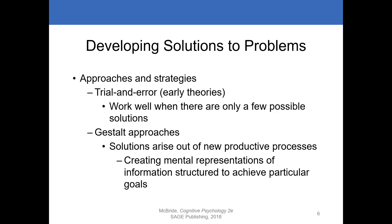Gestalt psychologists argued that we don't use a trial-and-error process. The Gestalt approach goes beyond past associations, and solutions arise out of new productive processes. These include creating mental representations of information structured to achieve a particular goal. Often solutions result from a sudden breaking away from past associations and reorganizing the mental representation of the problem. Other times, problems are solved by recognizing that past problems — even ones that differ on surface features — share an underlying structure with the current problem.